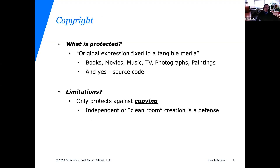The last type is copyright — another great one for computer applications, and its relationship to data has some interesting nuance. Copyright protects original expression fixed in a tangible medium: books, movies, paintings, and artistic and literary works. Source code is considered a literary work under the U.S. Copyright Act, so you do have a copyright in your source code. The limitation is that it only protects against copying — literal actual copying, not just the idea.